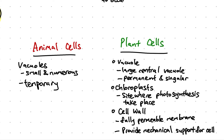The plant cell contains chloroplasts, which is what makes the plants green as they contain the pigment chlorophyll. It is also the site where photosynthesis takes place.